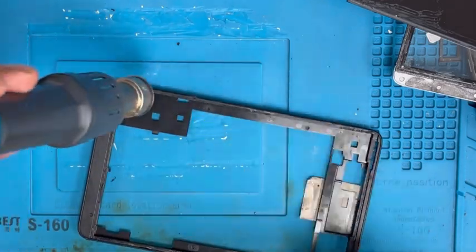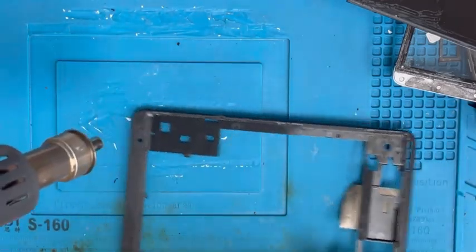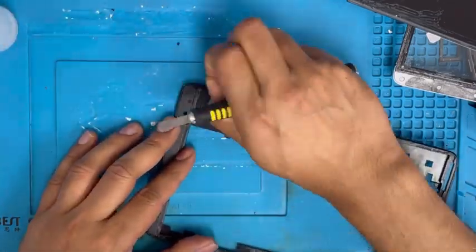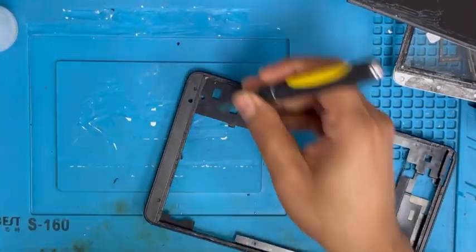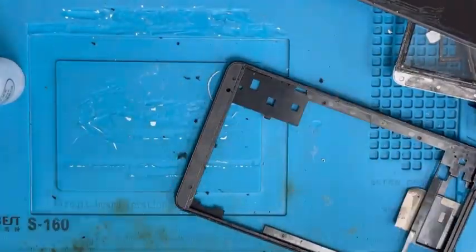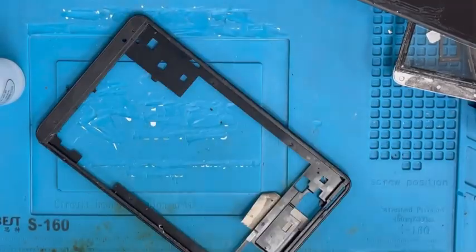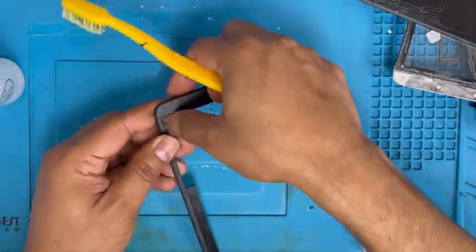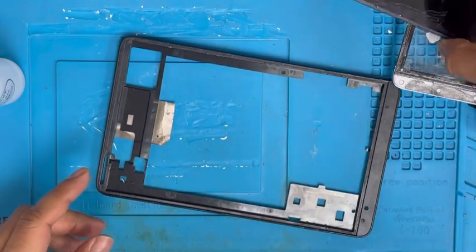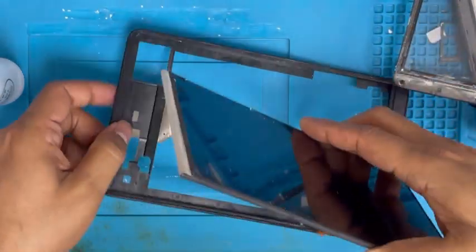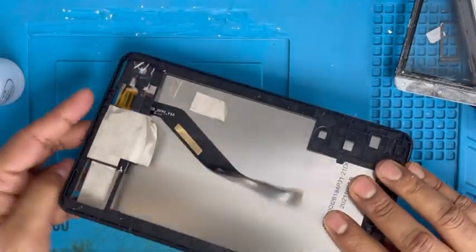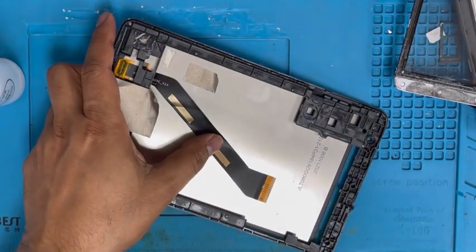Put some heat and some alcohol. There is broken glass and glue we have to remove. Almost clean everything. Make sure there is no broken glass. If there's broken glass when we put the digitizer on top of that, it might break the digitizer. So make sure you clean nicely.